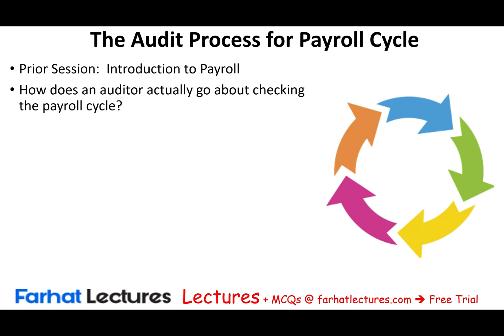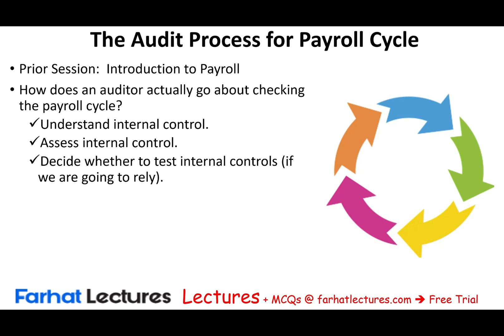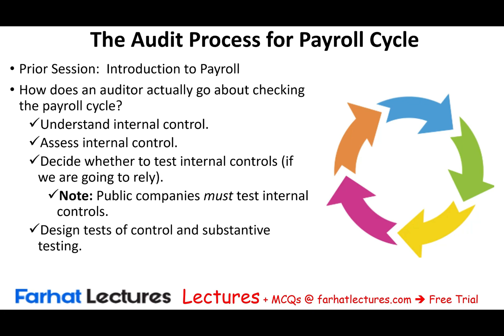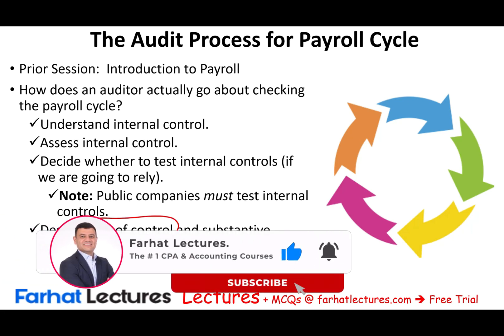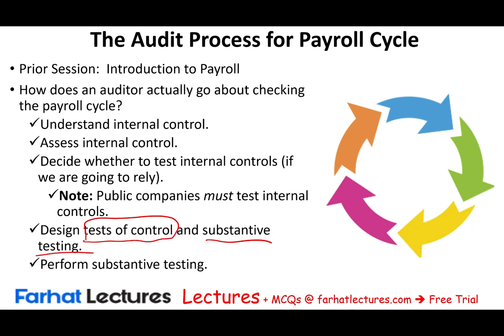So how does the auditor actually go about checking the payroll cycle? The first thing we have to do, just like in any cycle, is understand the internal control. We assess internal control — and we will see that payroll would always be assessed as low — then decide whether to test the control or not. If we are going to rely on internal control, we test it; otherwise, we will not. If we're dealing with a publicly traded company under PCAOB, then we have to test internal control. Then we will design tests of control and substantive testing.